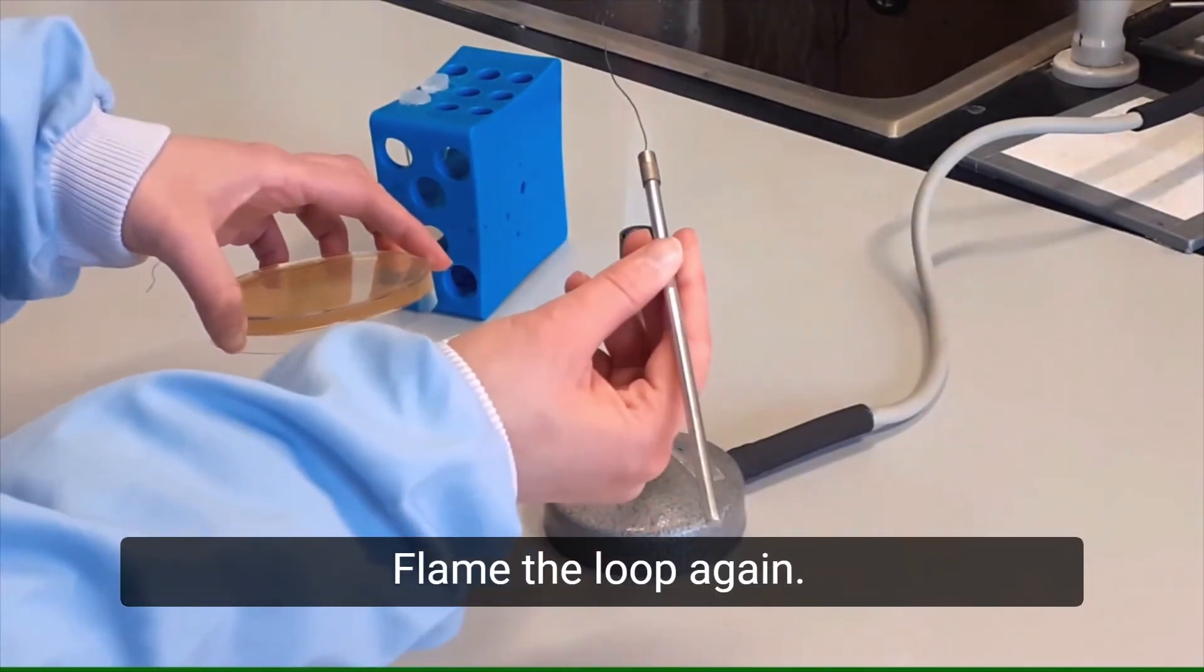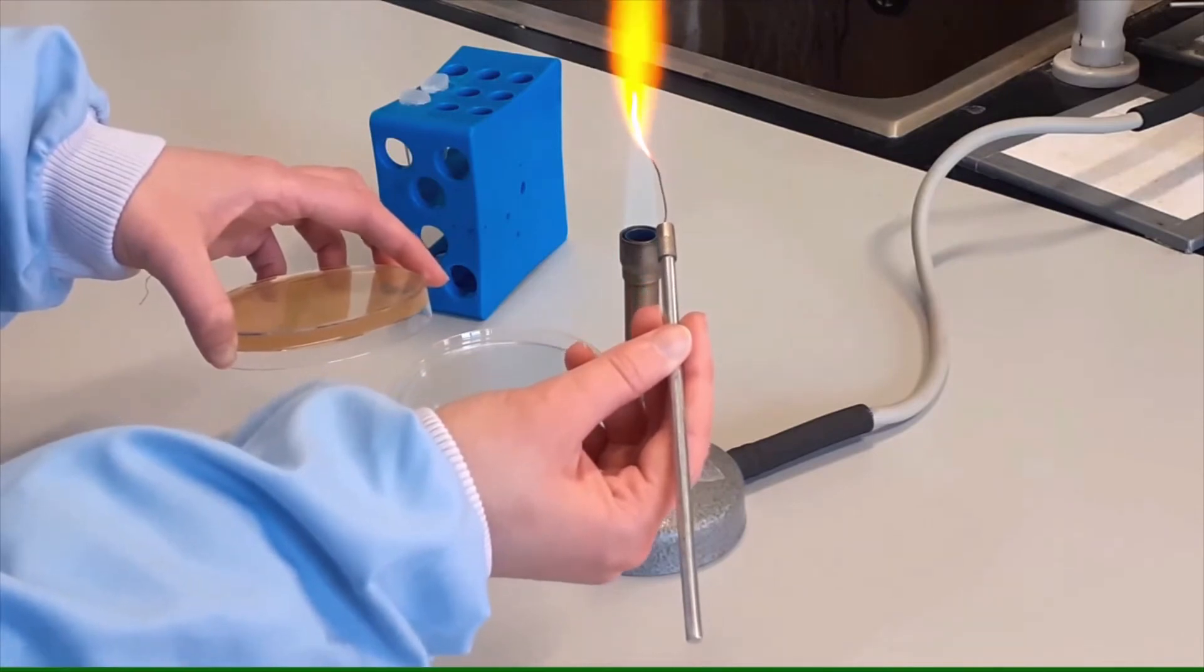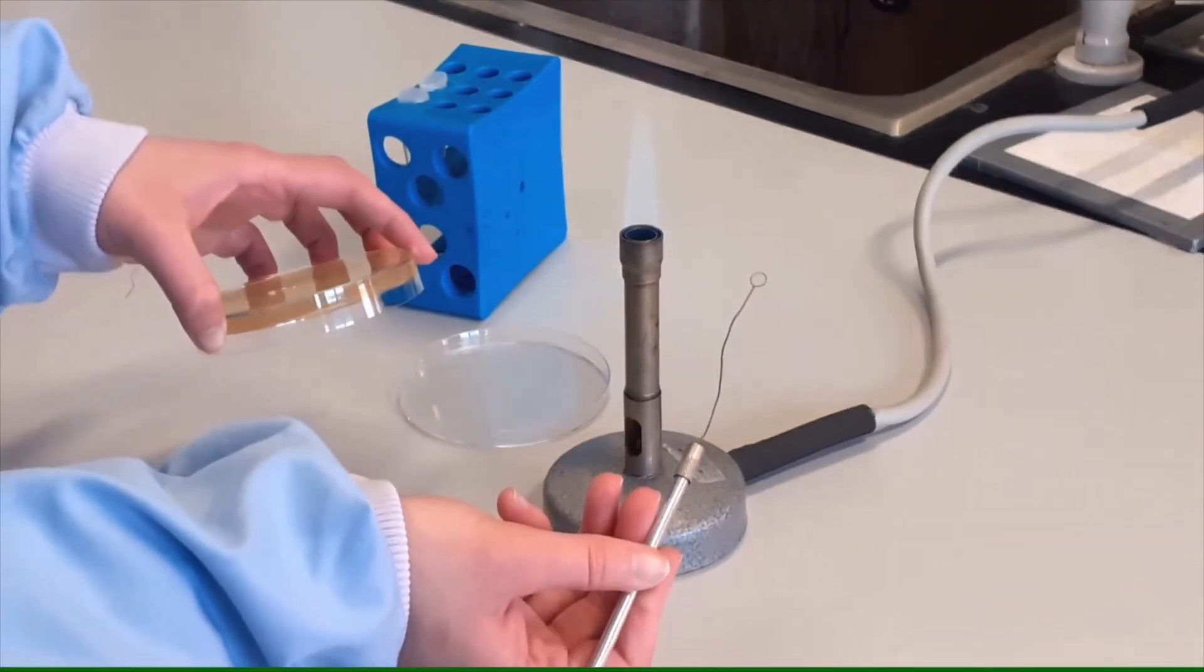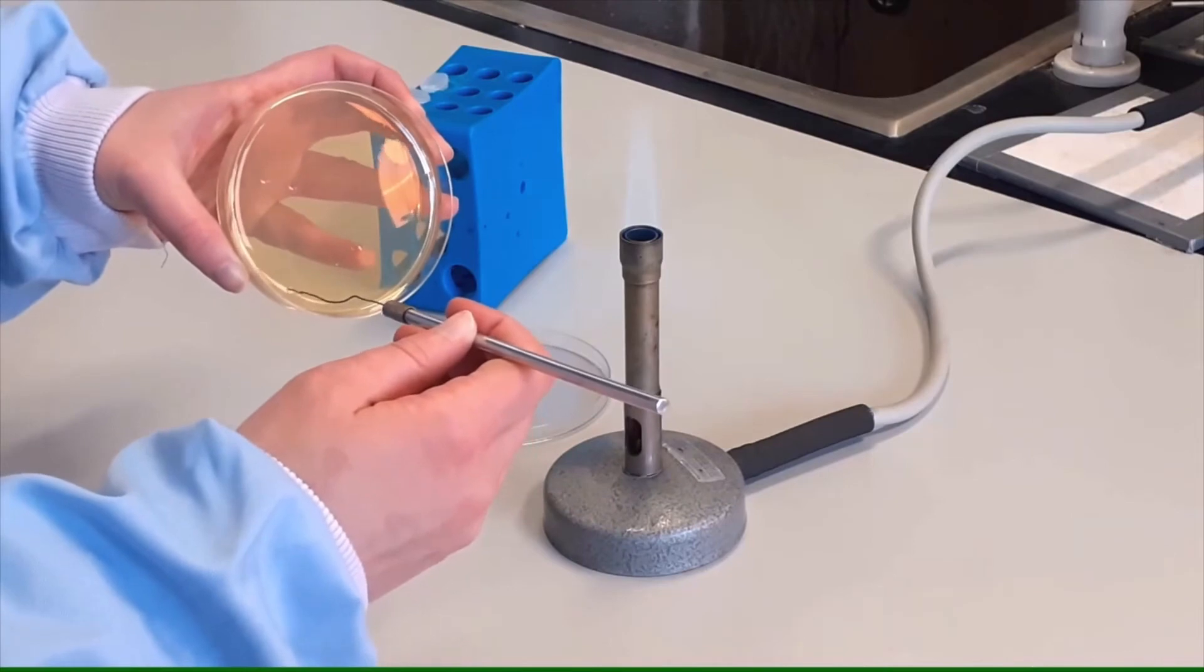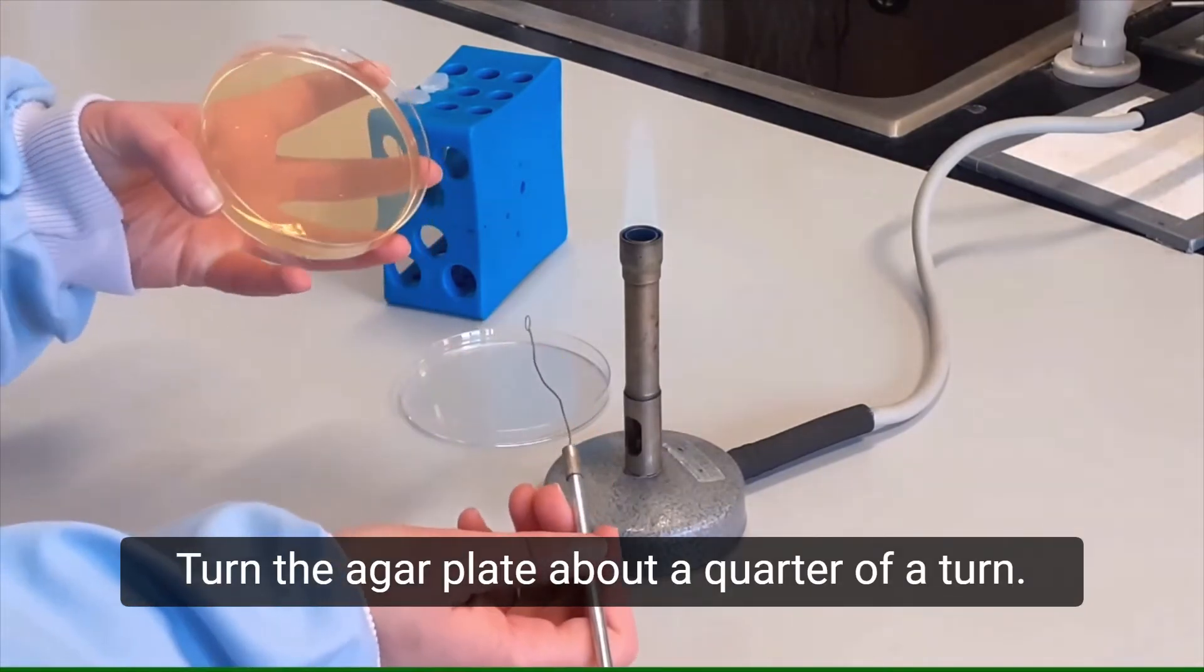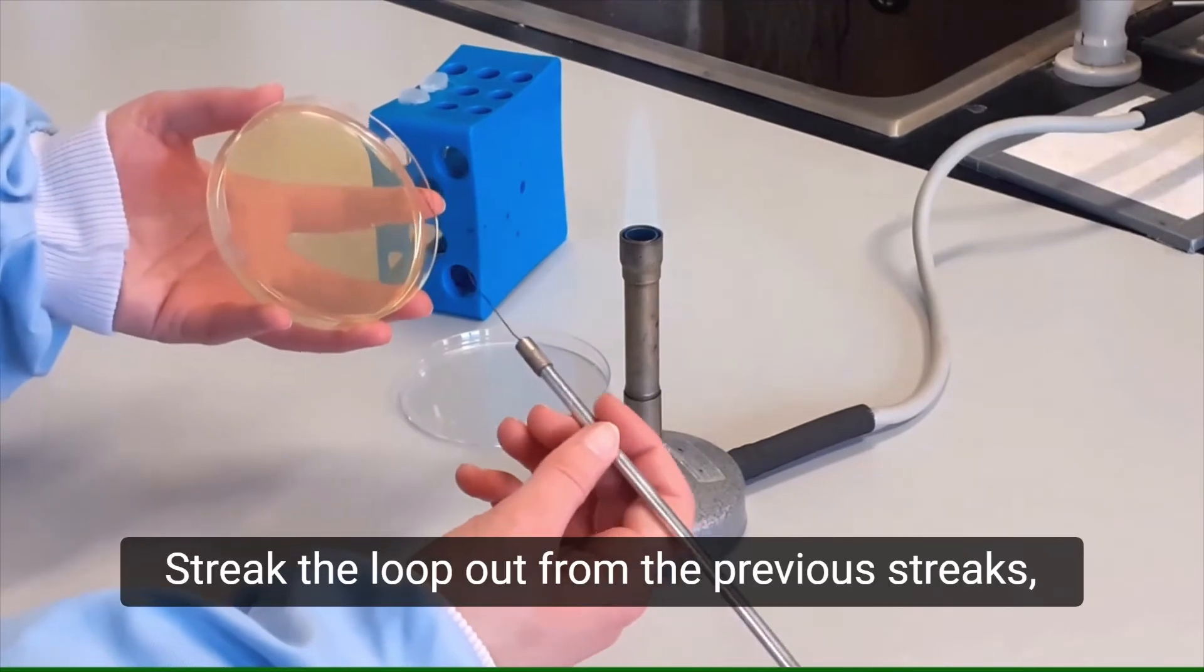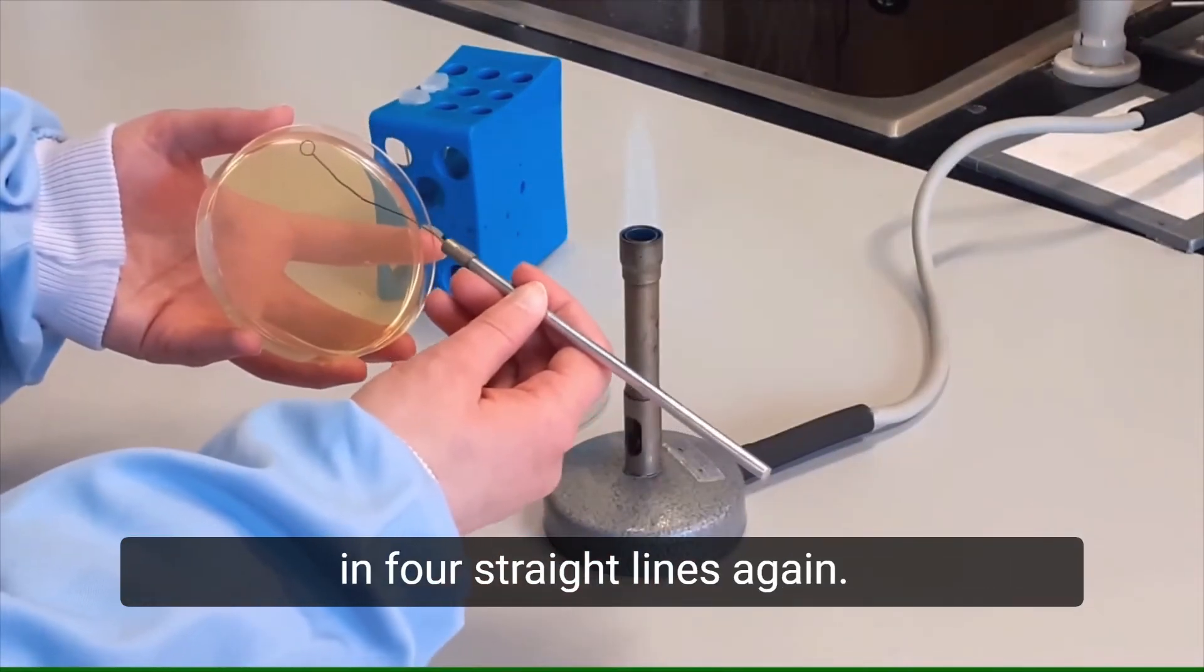Flame the loop again. Cool it in the agar as before. Turn the agar plate about a quarter of a turn. Again, streak the loop out from the previous streaks in four straight lines again.